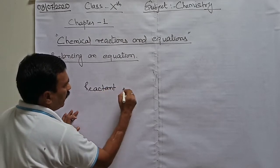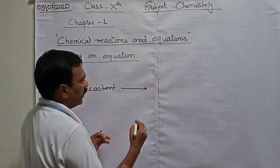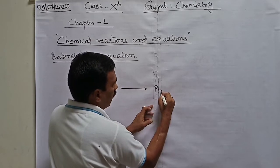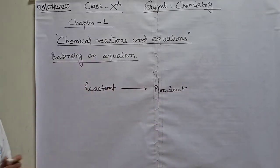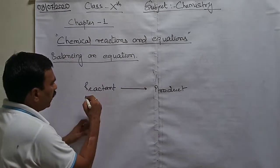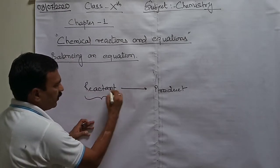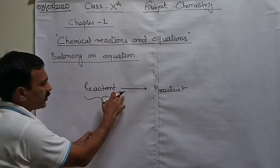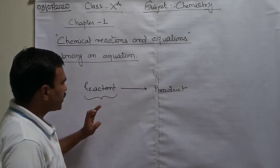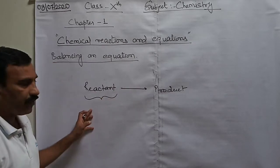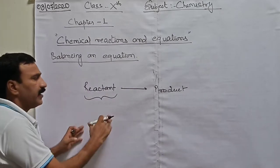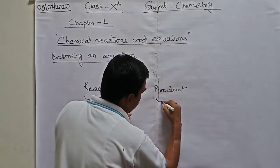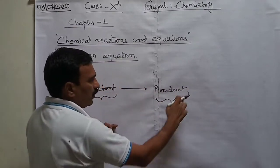Reactant, after that the process, and then after the product. Now, balancing an equation means the ingredients, or the components or the individuals which are seen on the reactant side, they also must be seen on the product side.